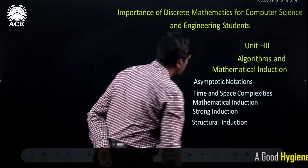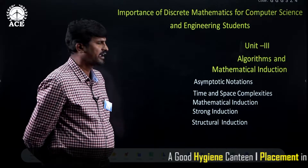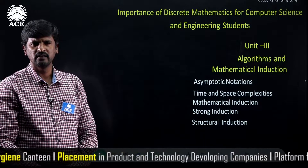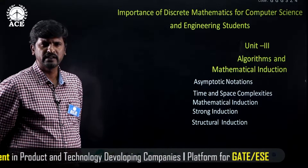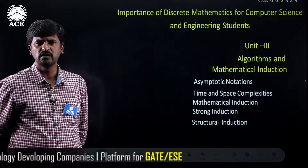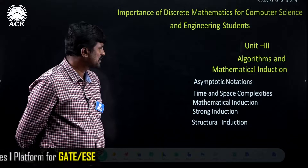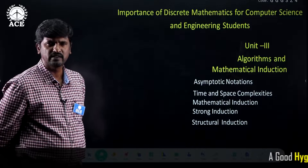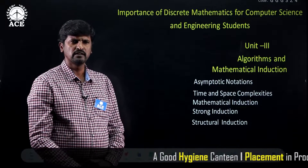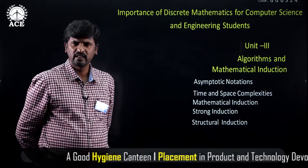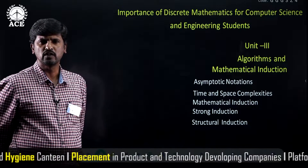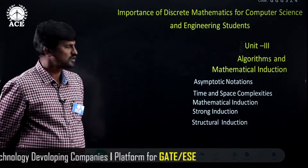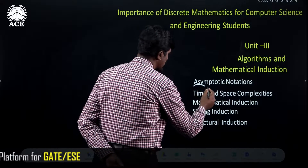The next unit is algorithms and mathematical induction. When a problem is given to students and they are asked to write code, it is better to first have some basic idea about the problem. That basic idea means writing an algorithm — a sequence of steps — for the problem. Then, based on the algorithm, they develop the coding. After writing the algorithm, we have to analyze it, and to analyze the algorithm we use asymptotic notations.